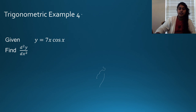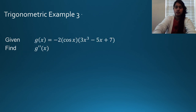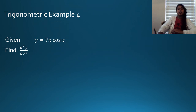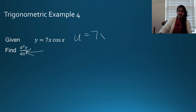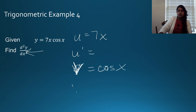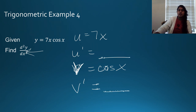Here's another second derivative problem. Work on this one on your own. Your u should be 7x and your v should be cosine x. Figure out u prime and v prime, then find y prime and y double prime.